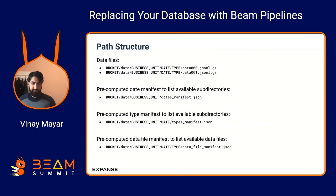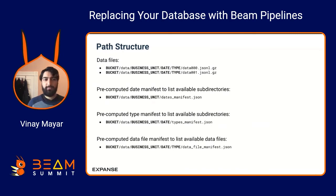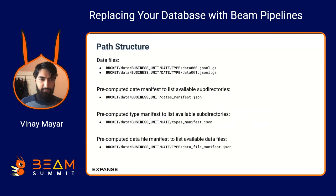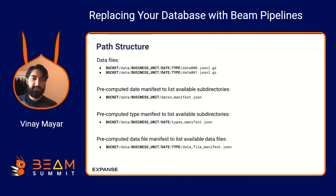The first thing to note is the path structure. To implement the three filters people care about — business unit, creation date, and observation type — we structure our paths accordingly. An object for a given business unit, date, and type goes to that appropriate location in the object store. We then pre-compute information at each level about what's available below it: a date manifest linking to all available dates for a given business unit, a types manifest listing available types for a given date, and at the lowest level, a list of available data files so we don't have to perform expensive list operations.